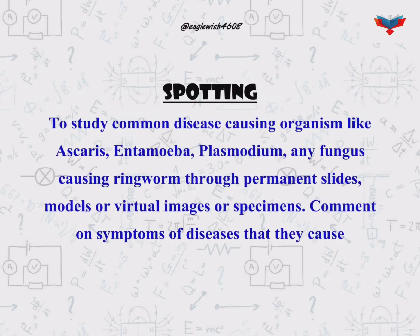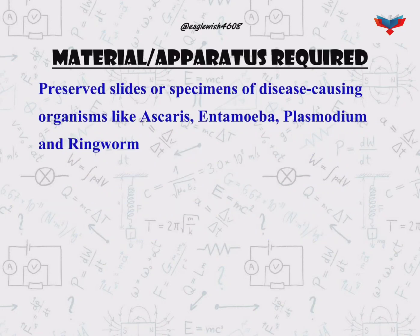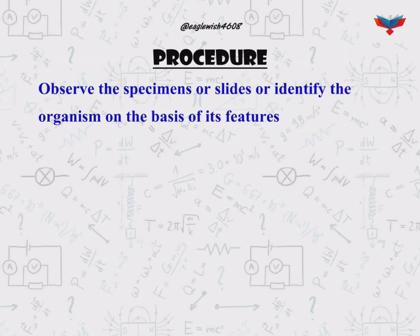The aim of the spotting is to study any disease-causing organism through their virtual images and comment on the symptoms of diseases they cause. The materials required in this spotting are the virtual image or specimen of Ascaris, Amoeba, Plasmodium, and Ringworm. In the procedure, we will observe the specimens and identify the organism and comment on it.